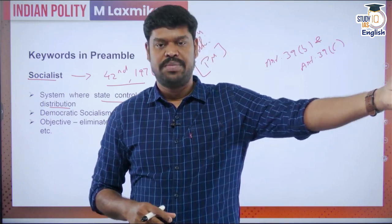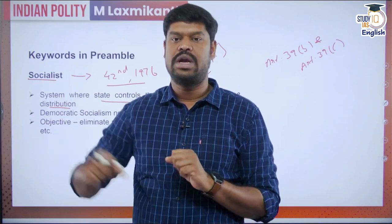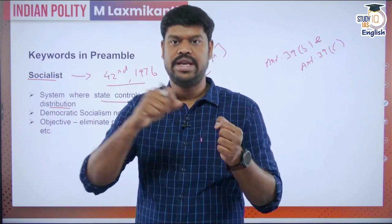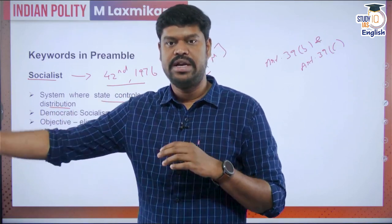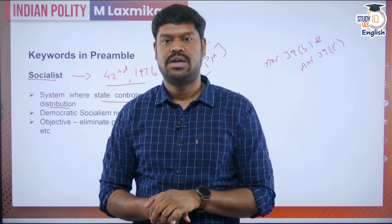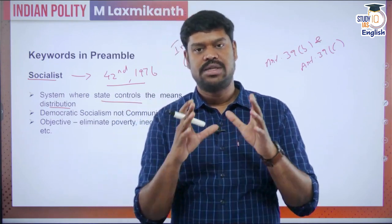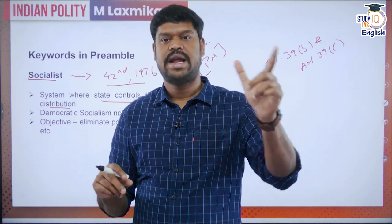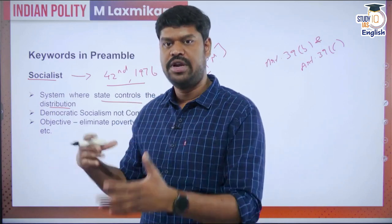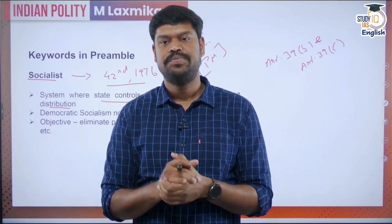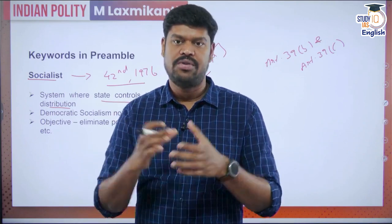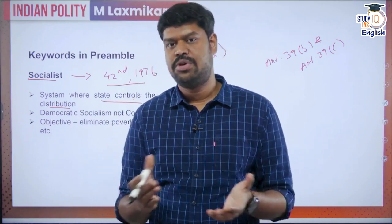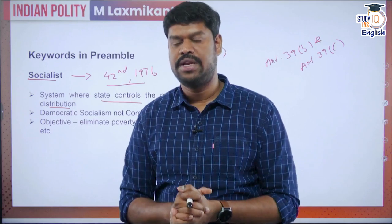Taking resources from people who have more and redistributing it to people who do not have it — for example, the direct tax system, the progressive taxation system, is an example of redistributing wealth. The indirect tax system is not progressive; it is direct taxes which are progressive in nature. Many state governments have come up with land distribution acts or land ceiling acts — those are examples of socialistic policy taken by the state.